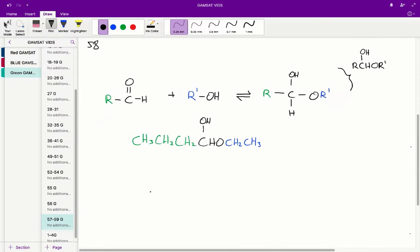So 58 is pretty much the same as 57 just in the other direction. So looking at our hemiacetyl, we have this. And if we just take a look at what the, in green, we have a 3-carbon alkyl chain.